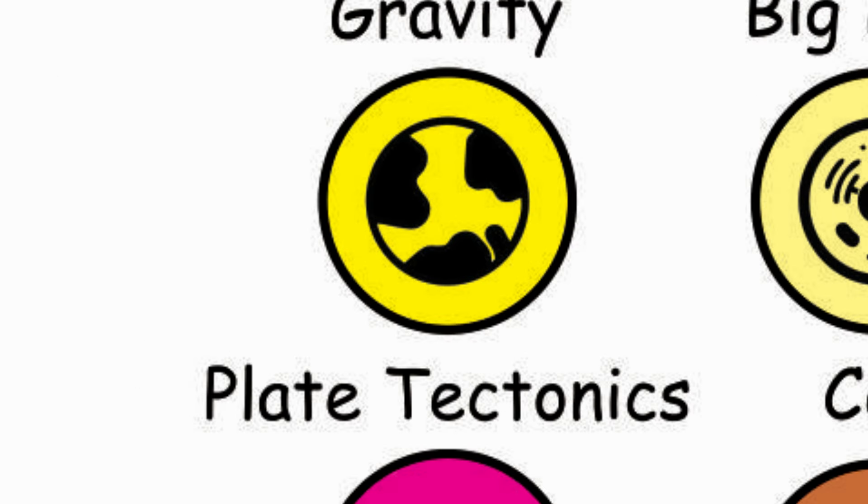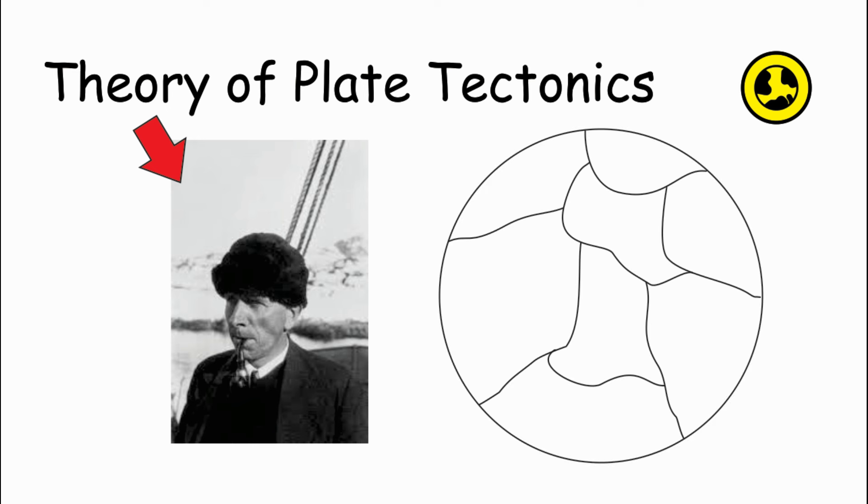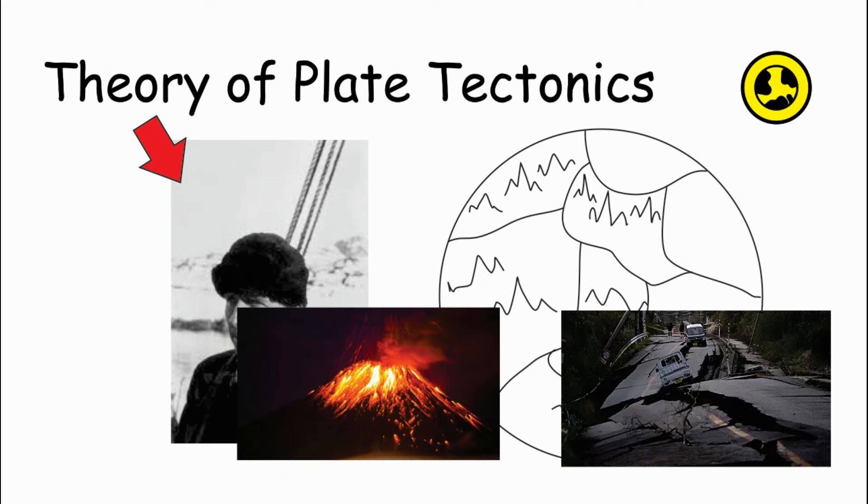Theory of Plate Tectonics: This theory proposed by Alfred Wegener explains that the surface of the Earth is made up of many pieces or plates like a jigsaw puzzle. The theory suggests that these plates are constantly moving, which is the main reason for the formation of mountains, ocean trenches, volcanoes, and earthquakes.